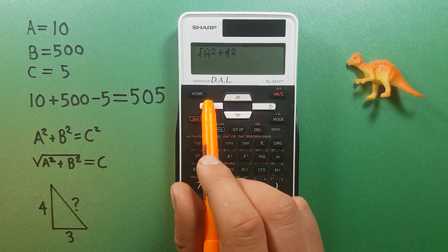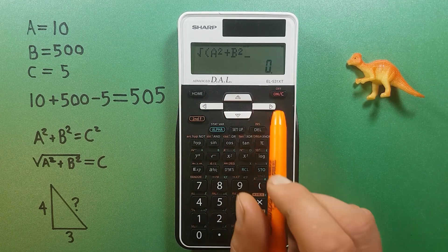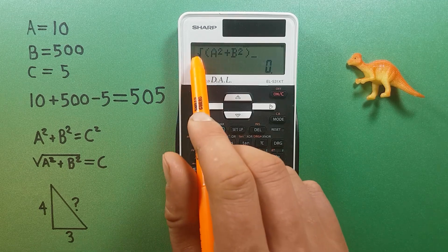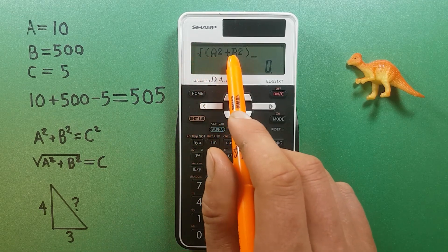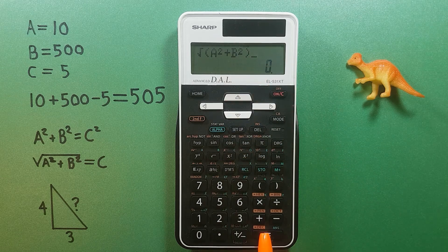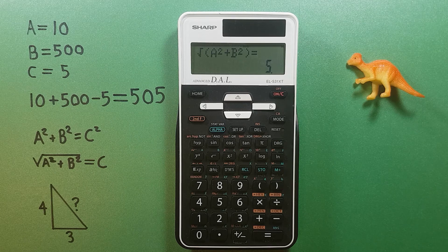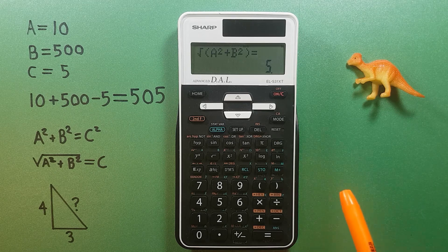And let's put brackets around this just so we're sure that the square root applies to everything. Square root of A squared plus square root of B squared, this should give us our C. Equals 5. That's the right answer.